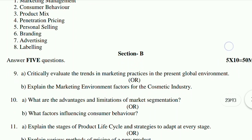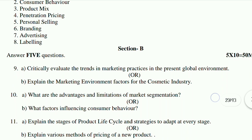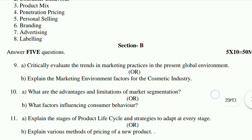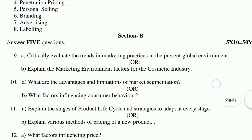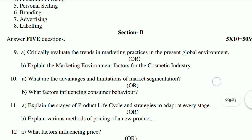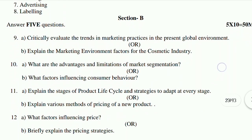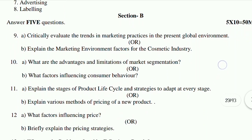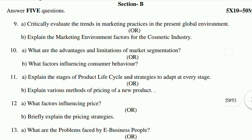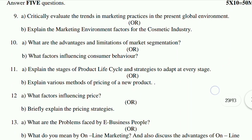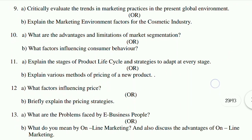11th A: Explain the stages of product life cycle and strategies to adapt at every stage. 11th B: Explain various methods of pricing of a new product. 12th A: What factors influencing price? 12th B: Briefly explain the pricing strategies. 13th A: What are the problems faced by e-business people? 13th B: What do you mean by online marketing and also discuss the advantages of online marketing?